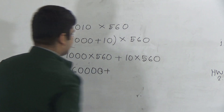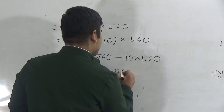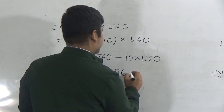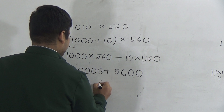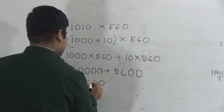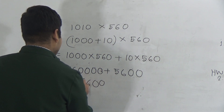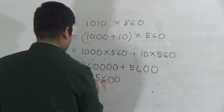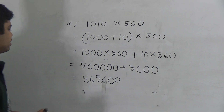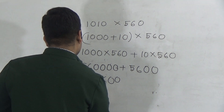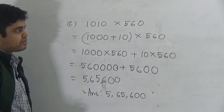For 10 × 560: multiply 56 by 1 to get 56, then count the zeros — there are 2 — so write 5600. Now add the two partial results together: 560,000 plus 5,600. Adding: 6 plus 0 is 6, 5 plus 0 is 5, giving the answer 5 lakh 65,600.